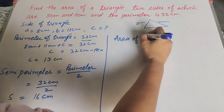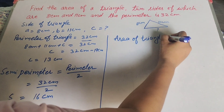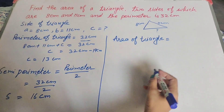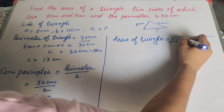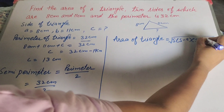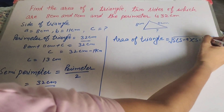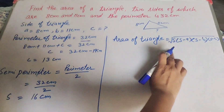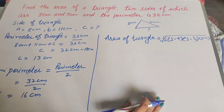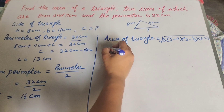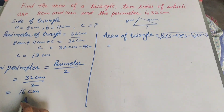Now we find the area of the triangle using Heron's formula: area equals square root of s times (s minus a) times (s minus b) times (s minus c), where s is the semi-perimeter we found, which is 16 centimeters.